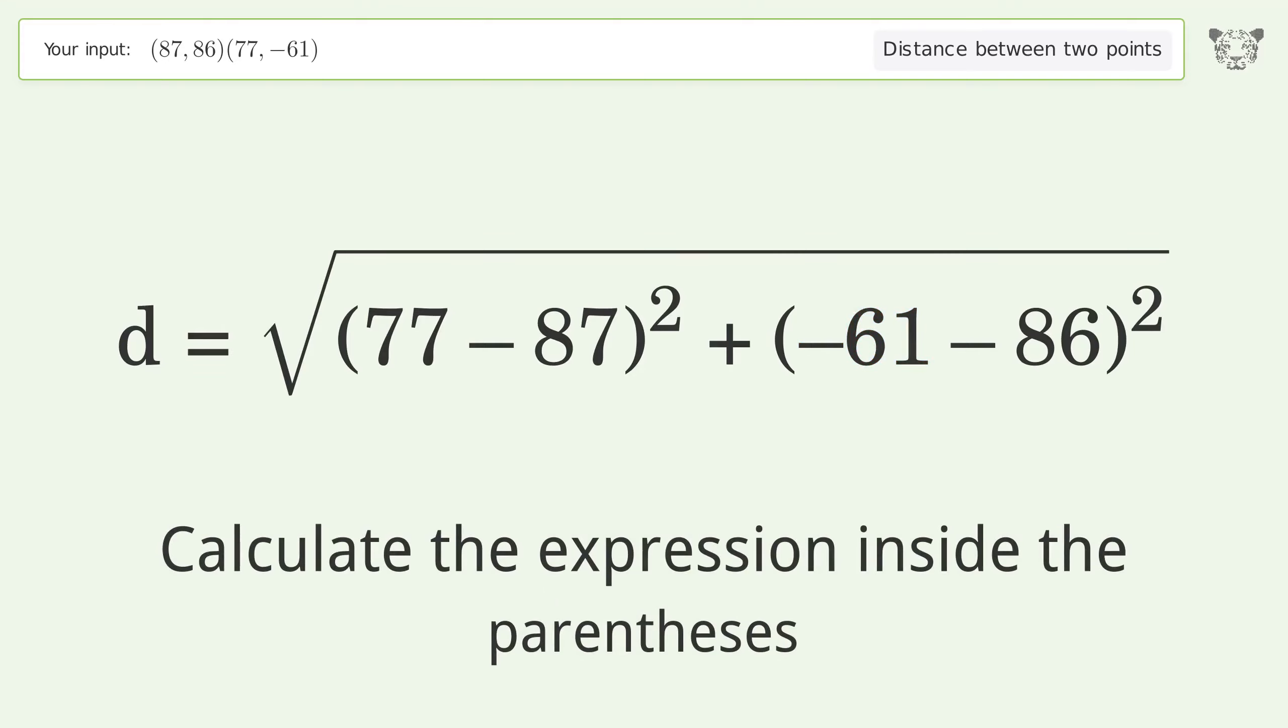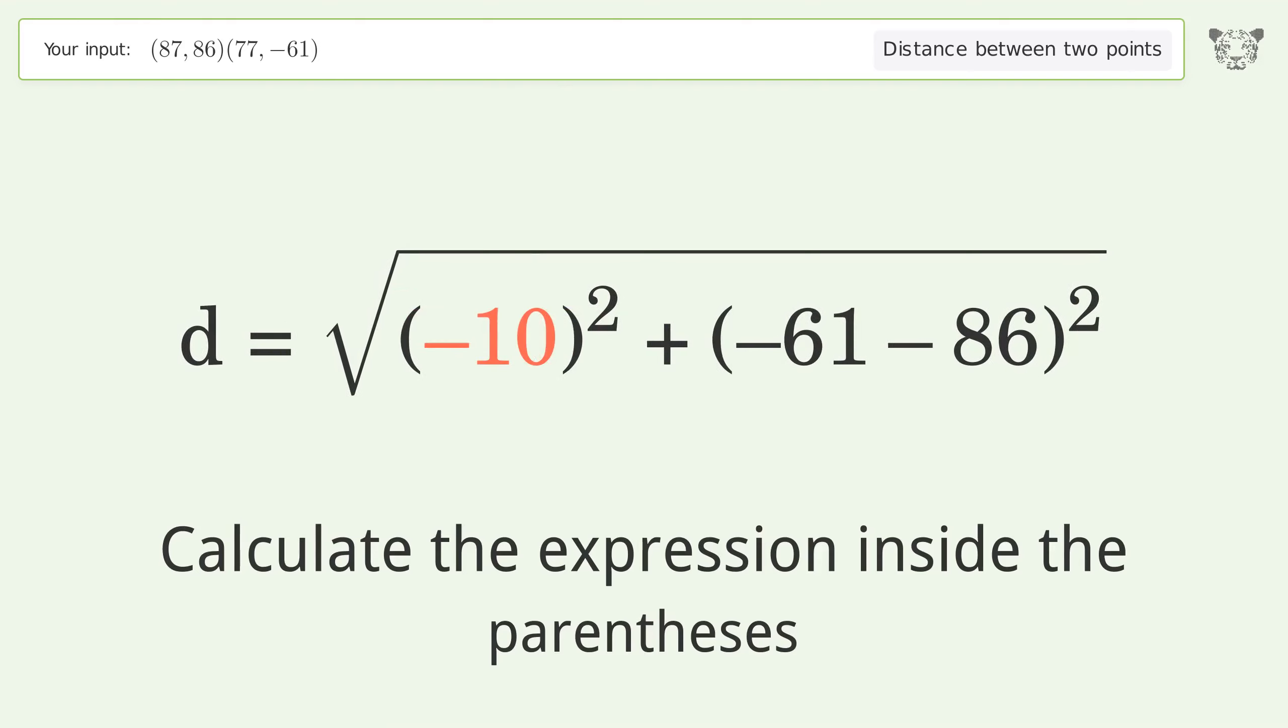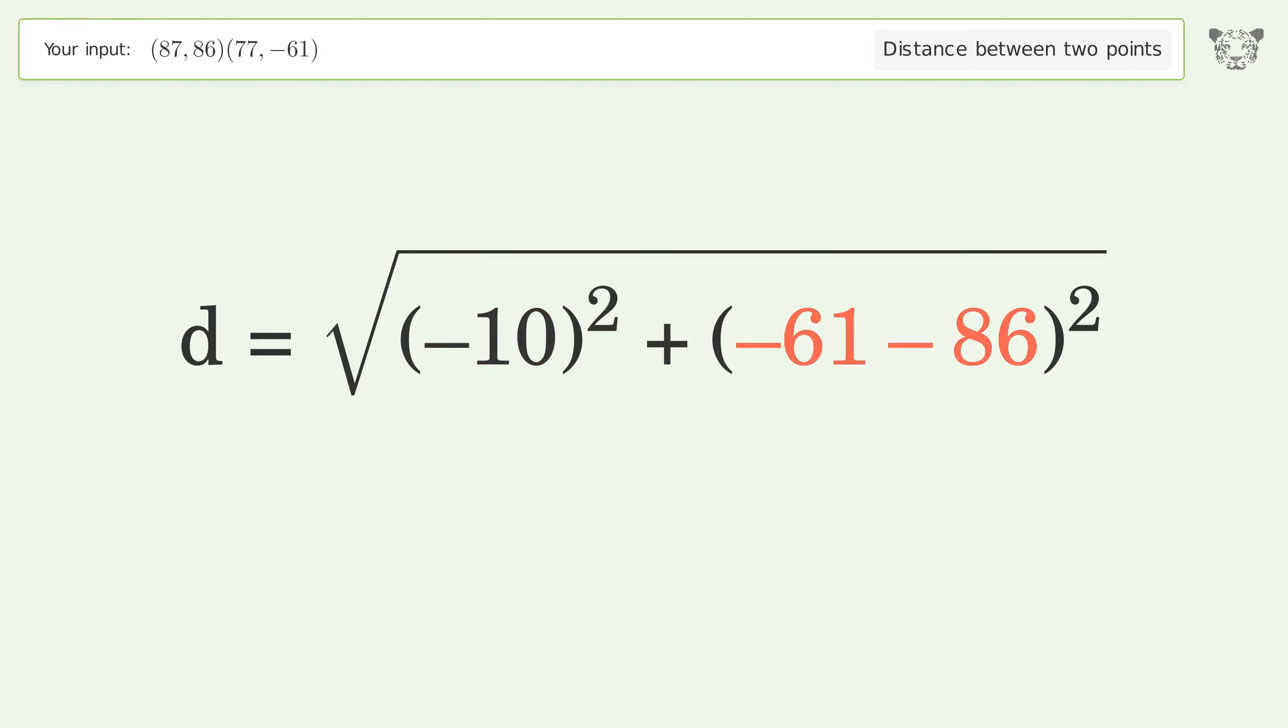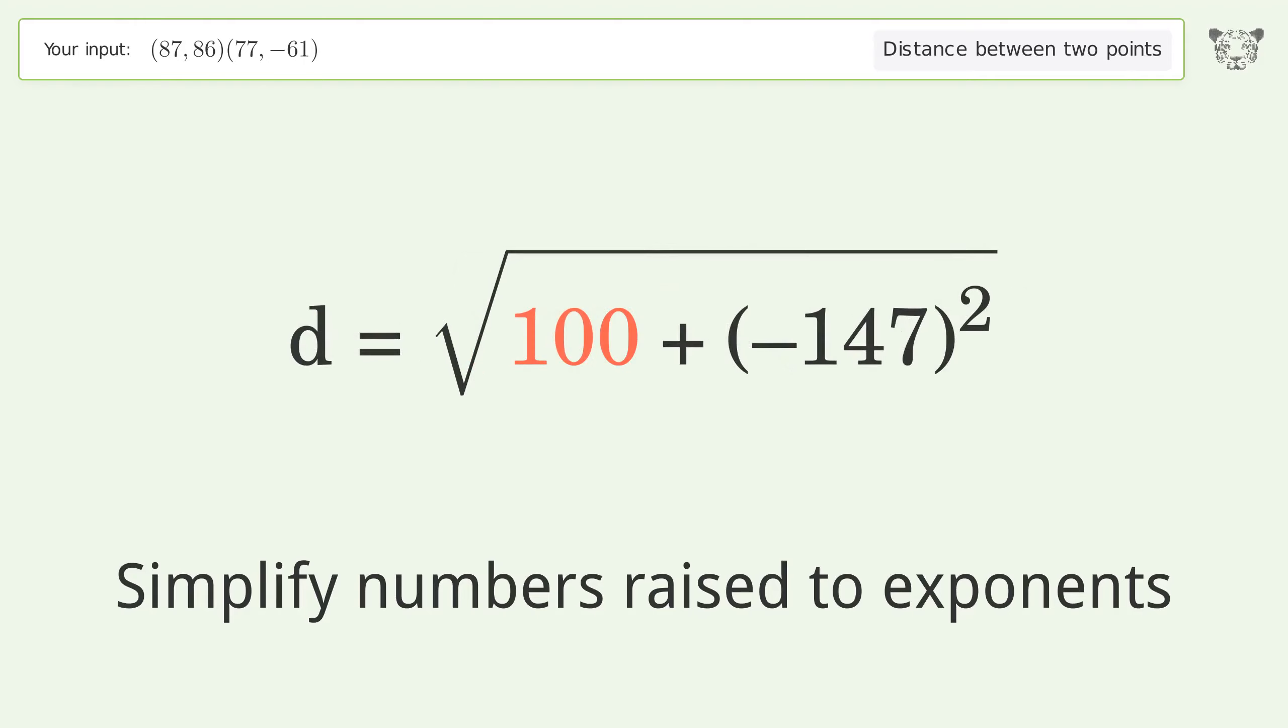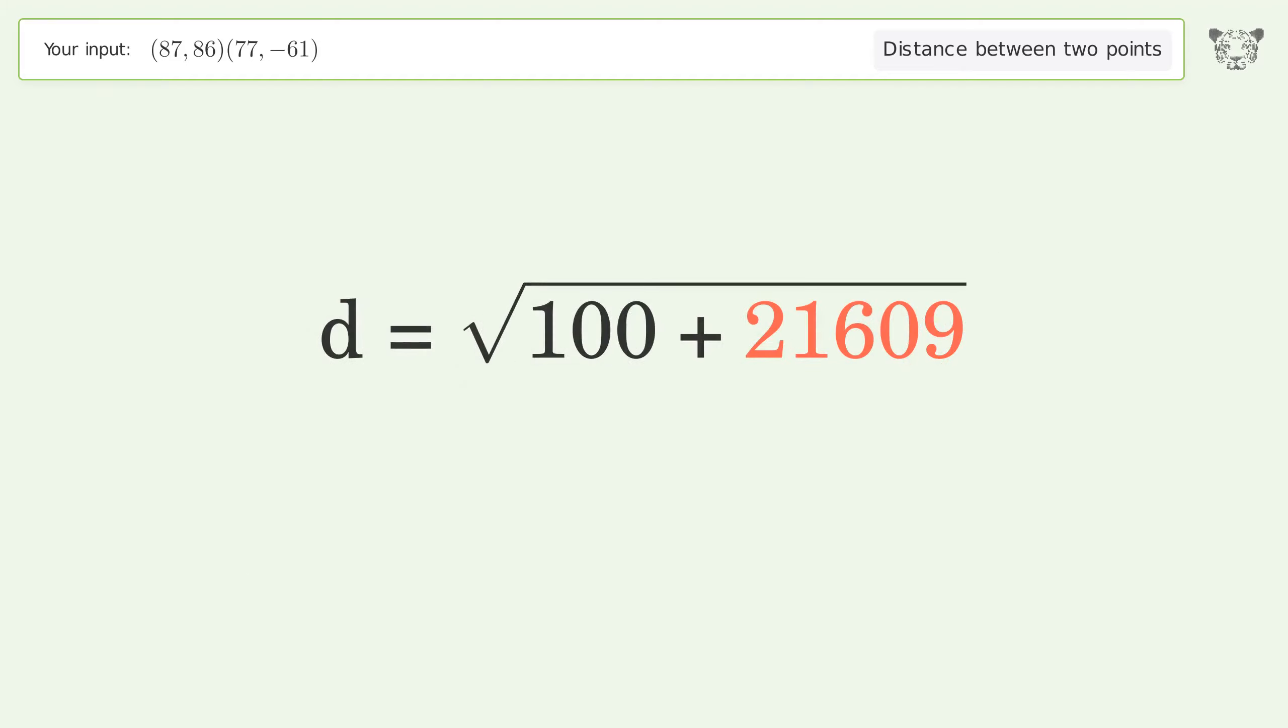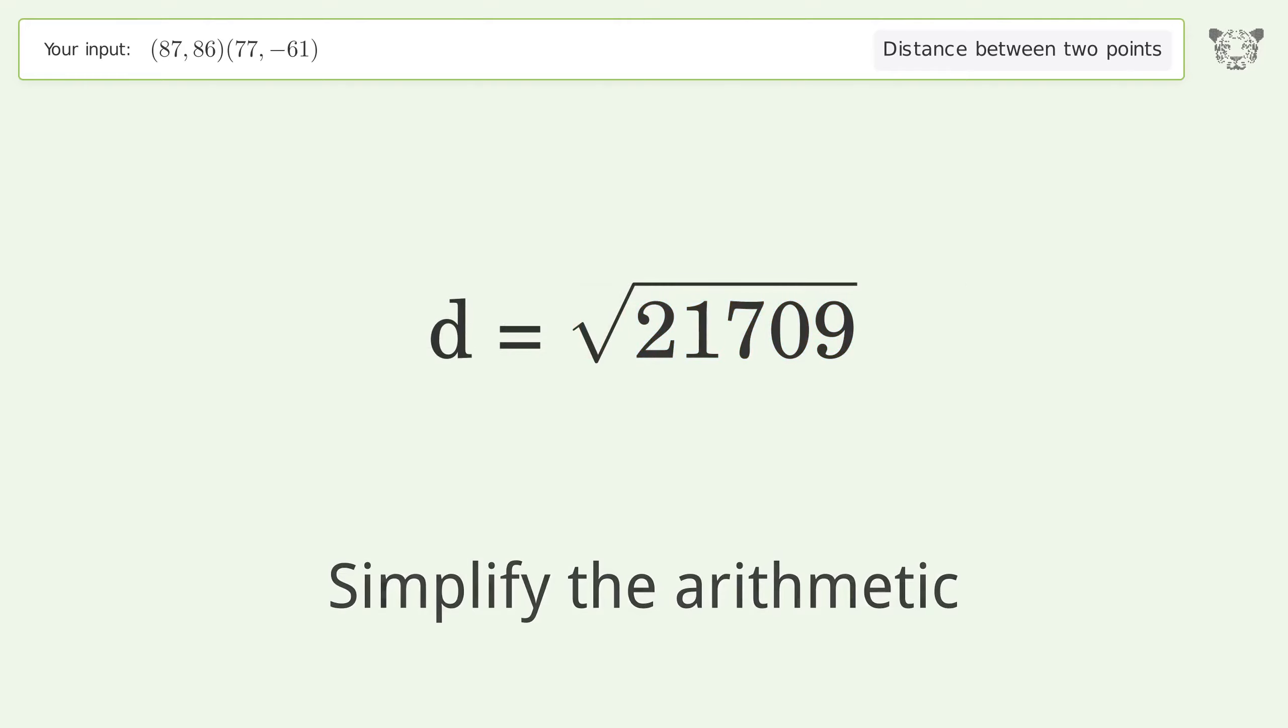Calculate the expression inside the parentheses. Simplify numbers raised to exponents. Simplify the arithmetic. And so, the distance between the two points is the square root of 21709, or 147.34.